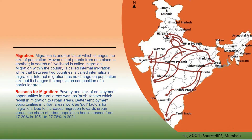Reasons for migration: poverty and lack of employment opportunities in rural areas work as push factors which result in migration to urban areas. Better employment opportunities in urban areas work as pull factors for migration. Due to increased migration towards urban areas, the share of urban population has increased from 17.29% in 1951 to 27.78% in 2001.